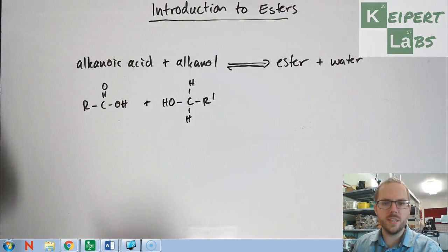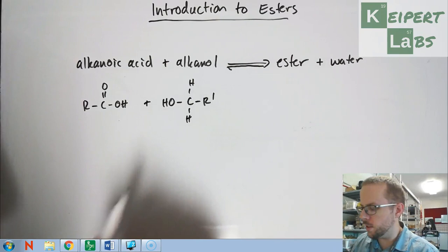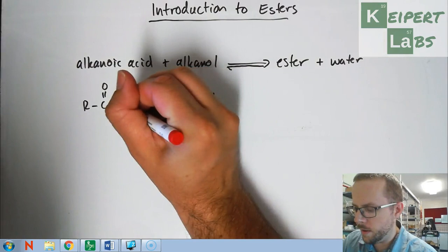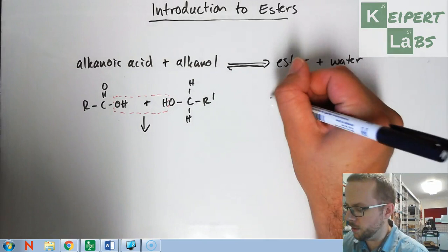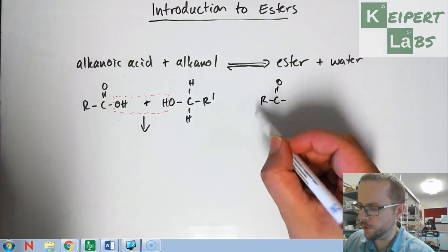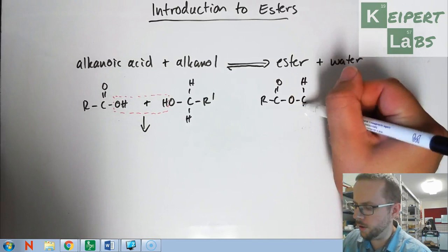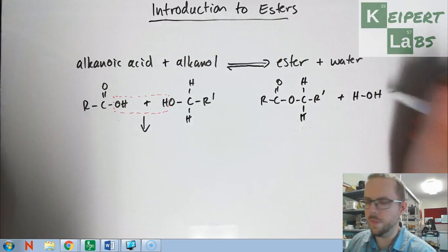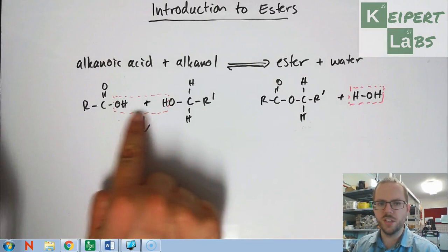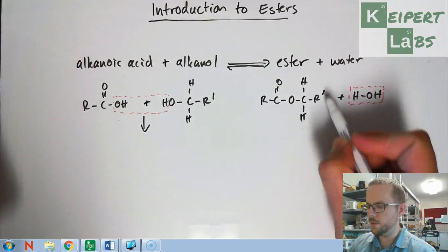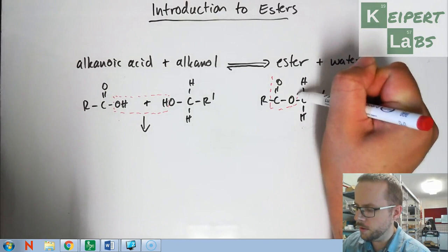But when these two things react together, then what happens is that we get these atoms being removed and we are connecting the rest of the molecule together. So we've got this part which originally came from the acid and then the rest which originally came from the alkanol. And then plus water.